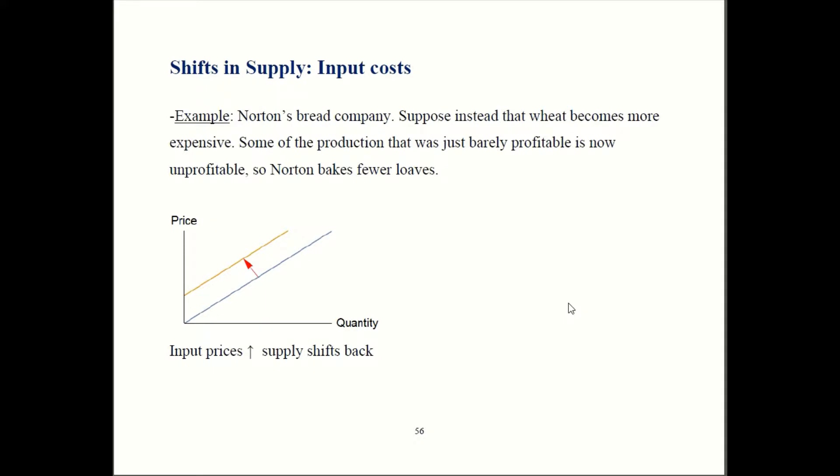He had all the same expenses he had earlier, but now he also has this higher cost of wheat that he has to pay. As a result, Norton's going to want to cut back on production. He's going to lay off some workers or do something like that. As a result, supply is going to contract, which means the supply curve is going to shift back.